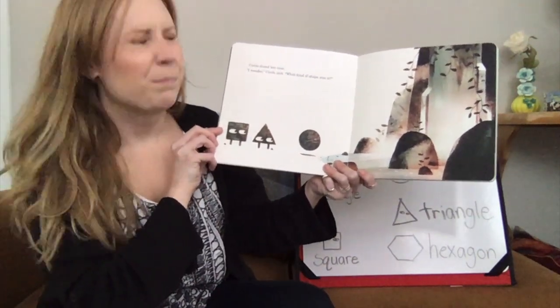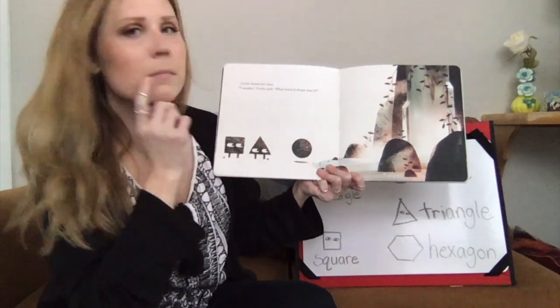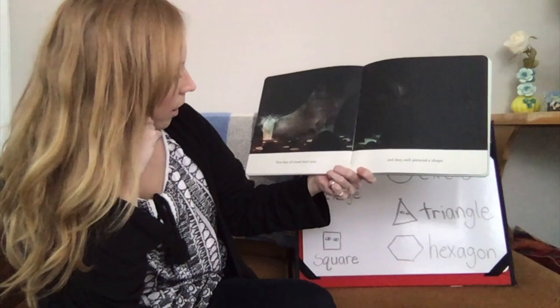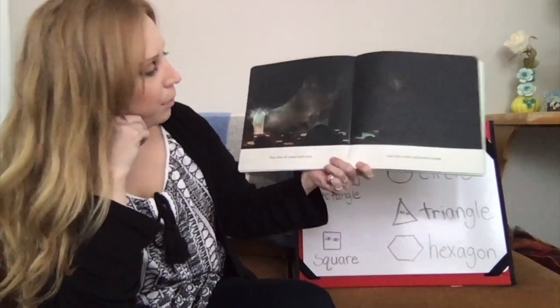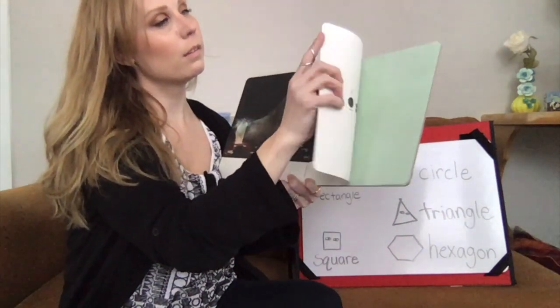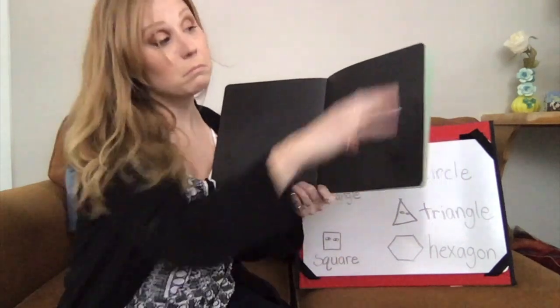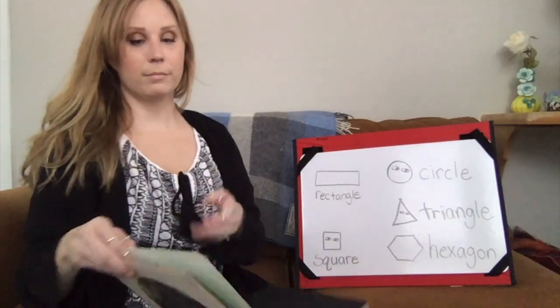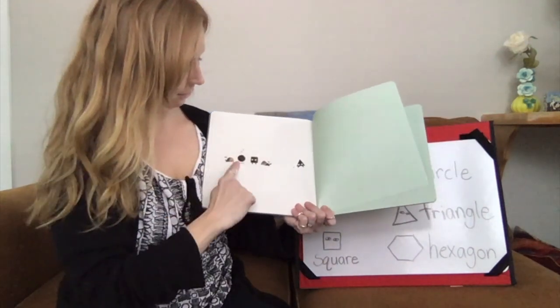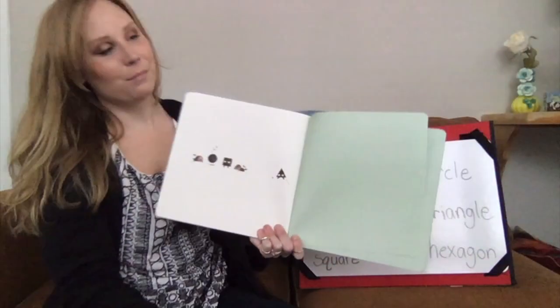Circle closed her eyes. I wonder, Circle said, what kind of shape was it? Then they all closed their eyes, and they each pictured a shape. If you close your eyes, what shape do you picture? One, two, three. They went back to playing their game. The end.